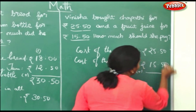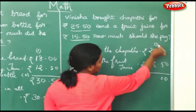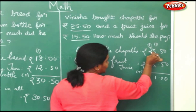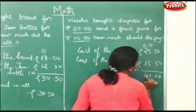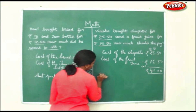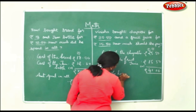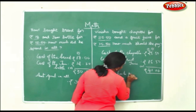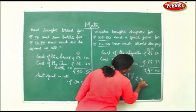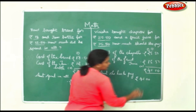0 plus 0 is 0. 5 plus 5 is 10. Again, 5 plus 5 is 10, 10 plus 1 is 11. 1 down. 1 plus 2 is 3, 3 plus 1 is 4. Amount she has to pay will be rupees 41. You can either add the zeros or just write rupees 41.